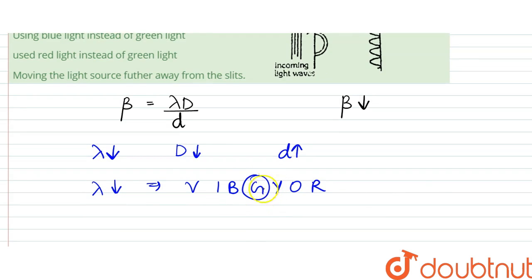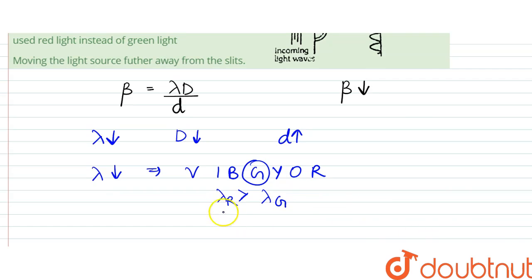Wavelength of red is greater than wavelength of green, and wavelength of blue is less than wavelength of green.